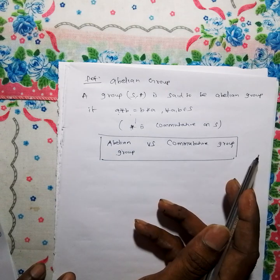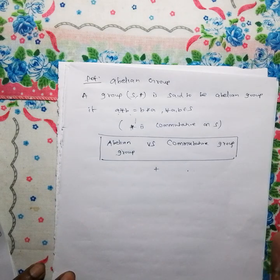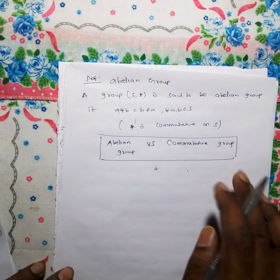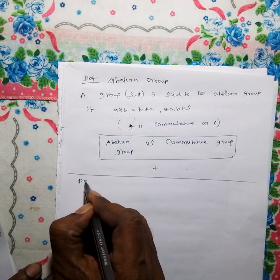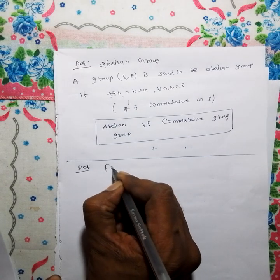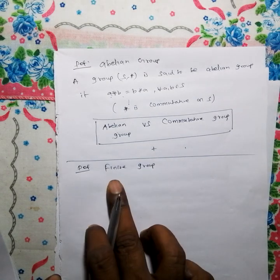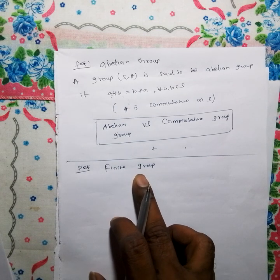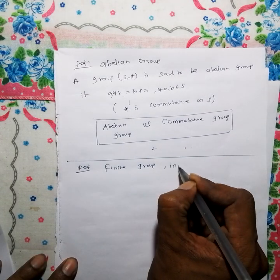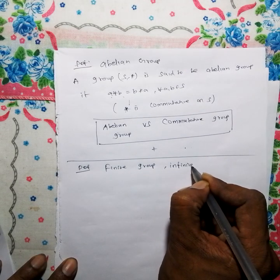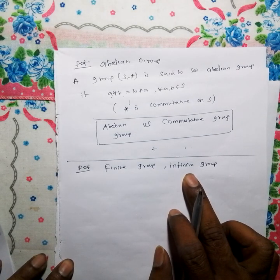An Abelian group is also called a commutative group. A group is said to be a finite group if it has finite cardinality. A group is said to be an infinite group if its cardinality is infinite.